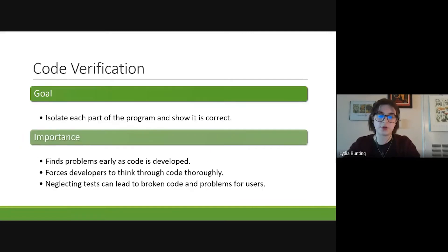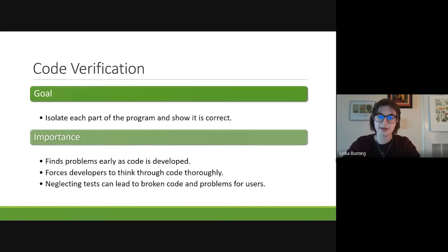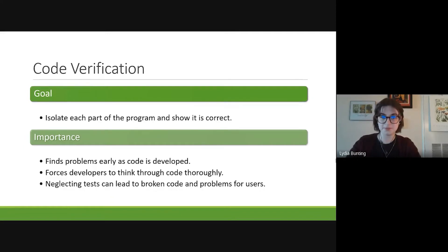The goal of code verification is to isolate each part of the program and show that it is correct and operating as expected by the person who wrote the code. This is important because code verification early on identifies problems as the code is developed, rather than allowing them to go undetected and potentially affect the rest of the code. Second, the process ensures that code developers are thoroughly thinking through the code they write and that they understand how it's functioning. Third, neglecting tests and the code verification process can lead to code that is broken, ineffective, or inadvertently affects other parts, which can lead to problems for users.